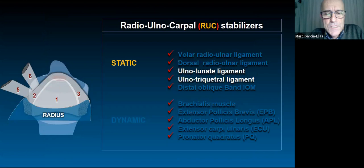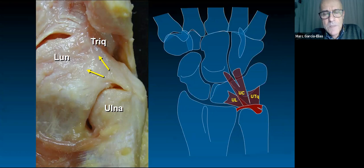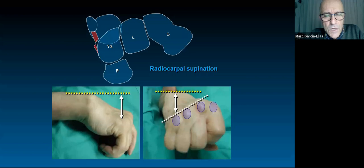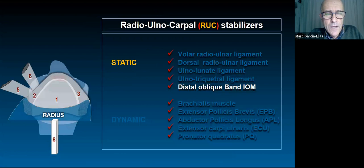The ulnocarpal ligaments originate on the anterior border of the triangular fibrocartilage and consist of two diverging bundles: the ulnotriquetral bundle and the ulnolunate bundle. In some specimens a superficial extension to the distal row — the ulnocapitate bundle — can be found. When these ligaments are torn, the medial column of the wrist moves palmarly, causing rotational subluxation in supination — typical in rheumatoid patients. Do not jump to the conclusion that this is ulnar dislocation; it is a radiocarpal supination deformity due to torn ulnocarpal ligaments.